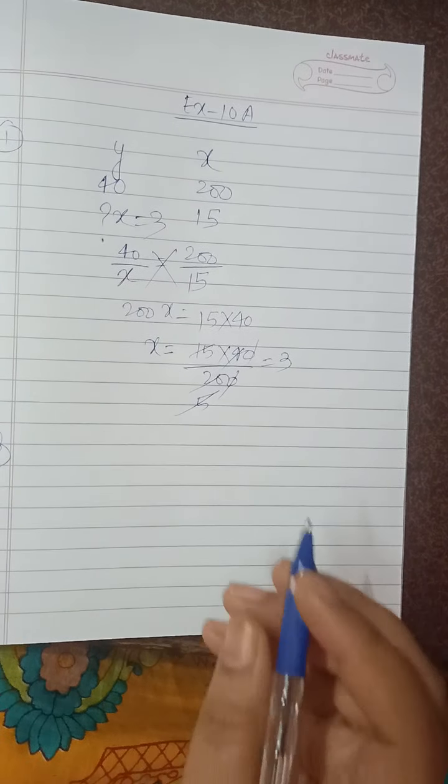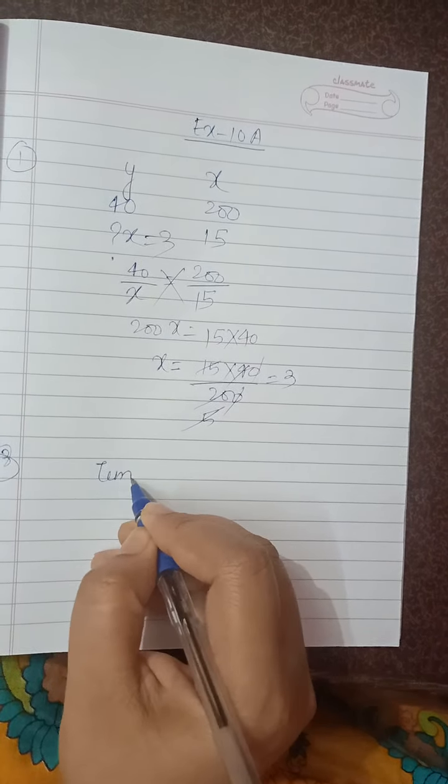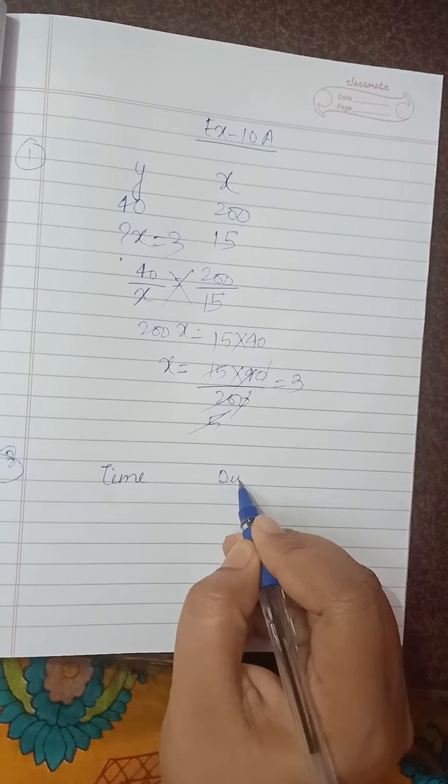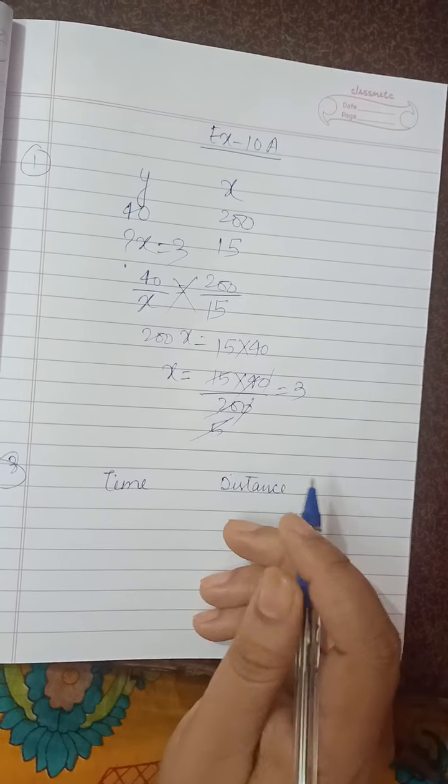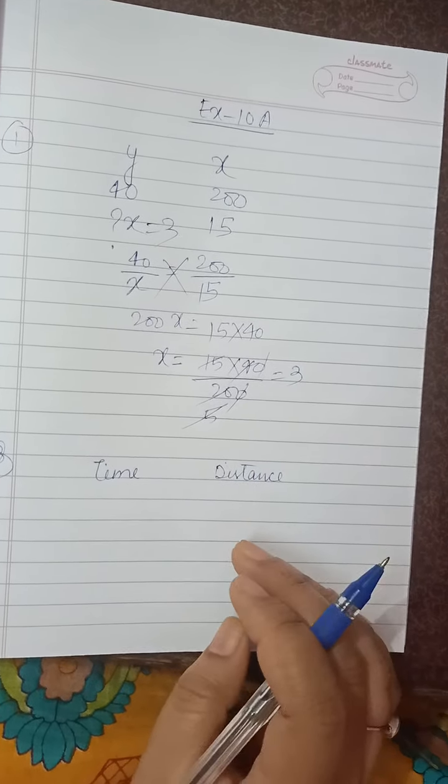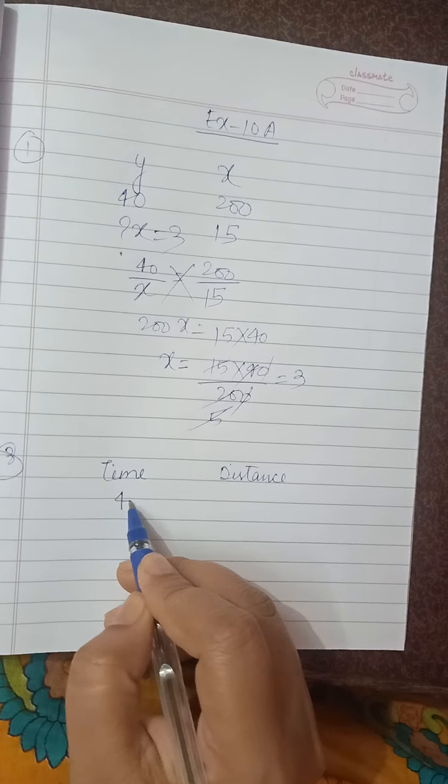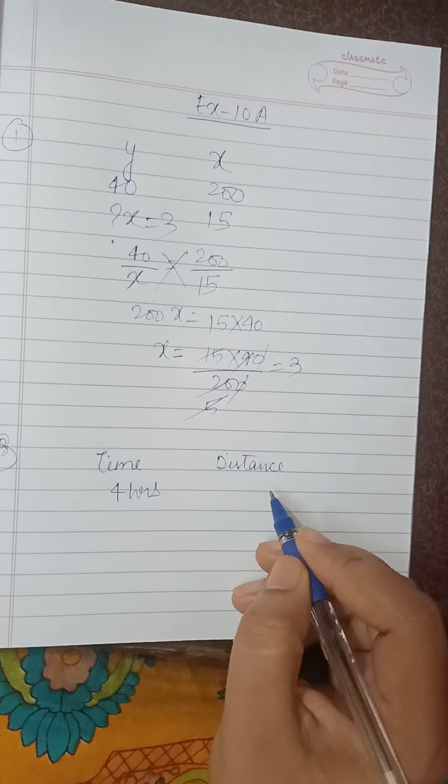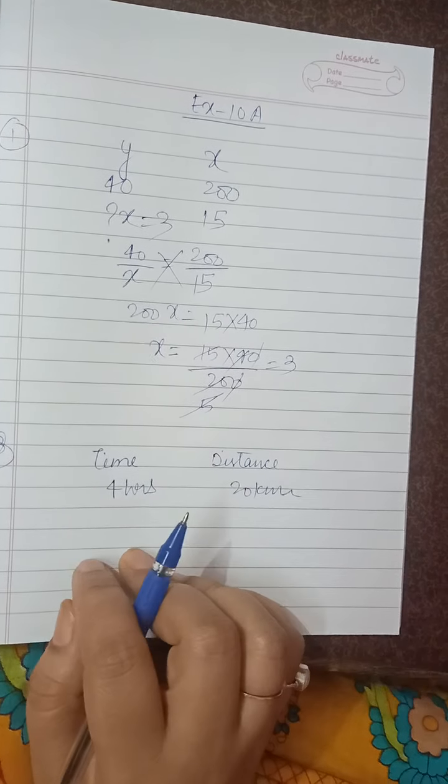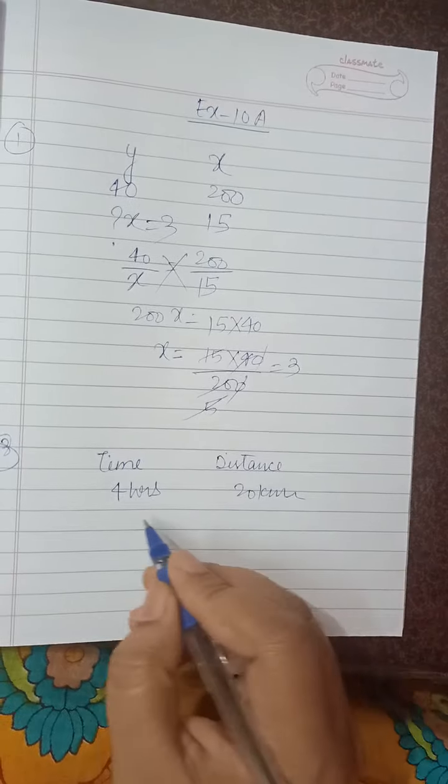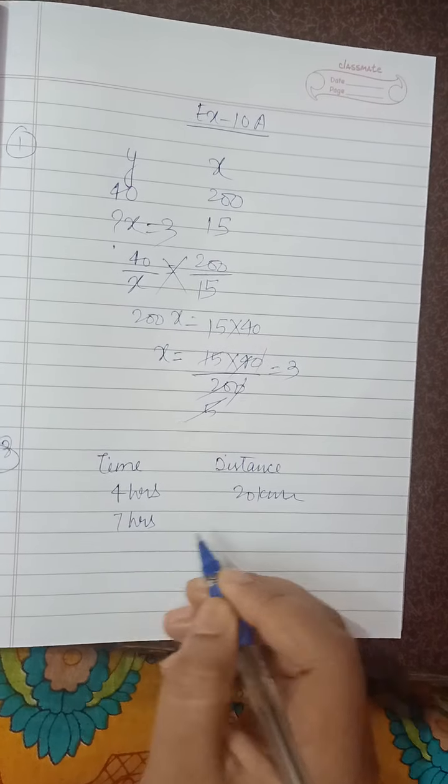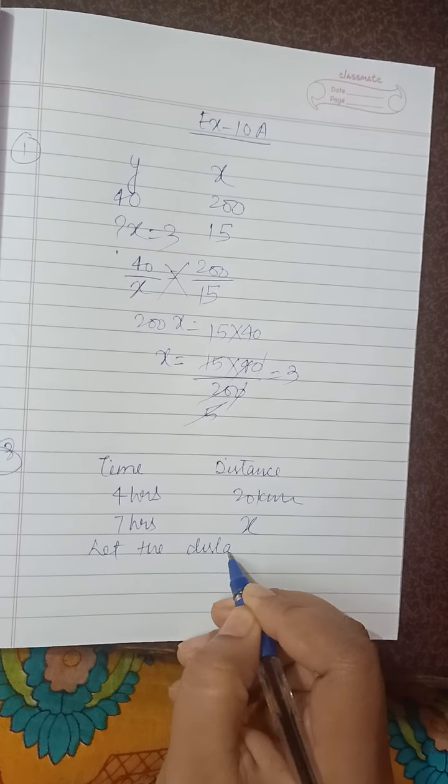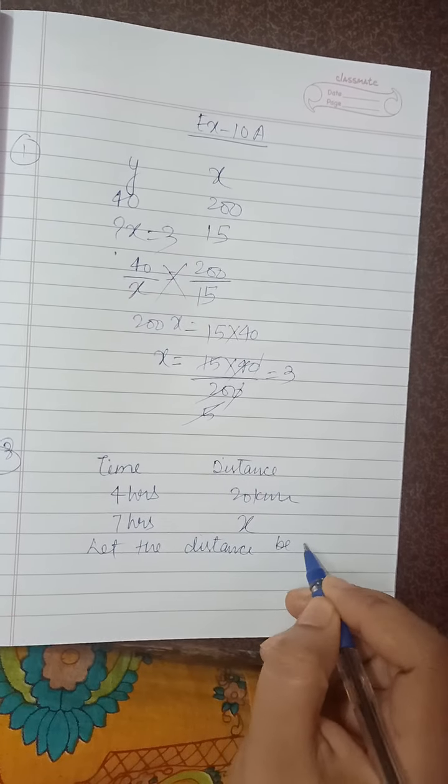We have two values here. The first is the time and the second is the distance. You write it like this. It will be the easiest question. In 4 hours, the distance is 20 km. You have to get the distance in 7 hours. Let the distance be x.